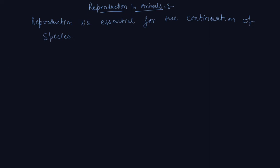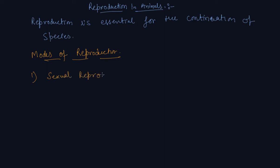The modes of reproduction can be firstly sexual reproduction, and another one is asexual reproduction. We will discuss each one further in detail, one by one.